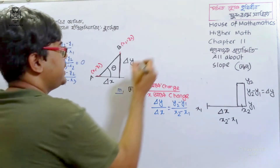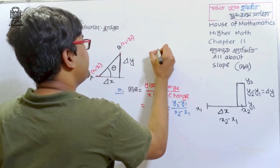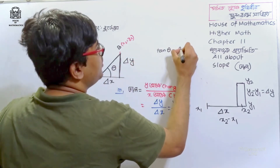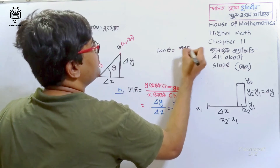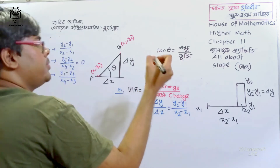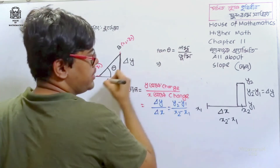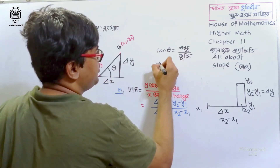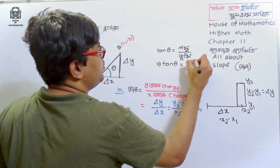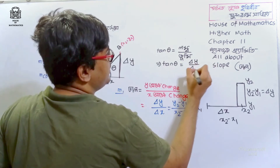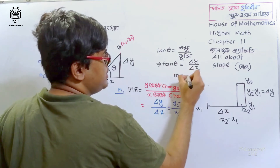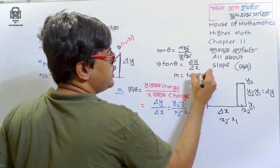The angle that we know: tan theta is equal to — Lombo by Bhoomi — which is delta y divided by delta x. That means delta y divided by delta x is equal to tan theta.